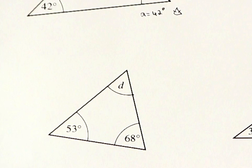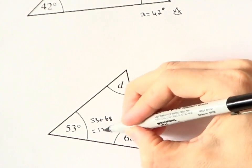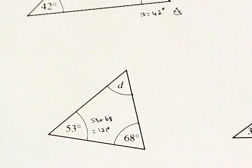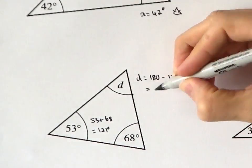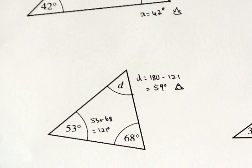Now, D must be supplementary to 53 and 68. 53 and 68 add to 121. Take that away from 180 to get 59 degrees for D.